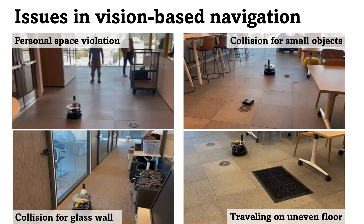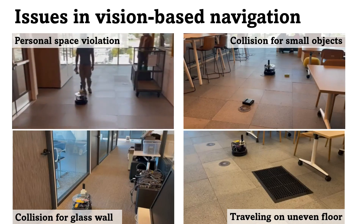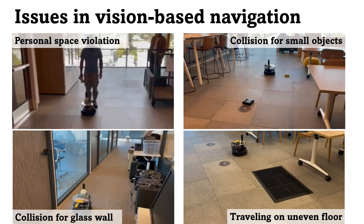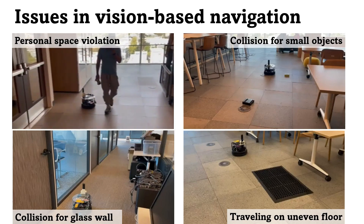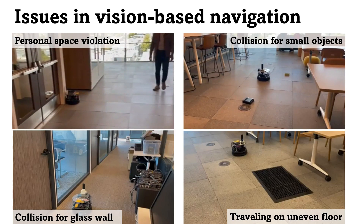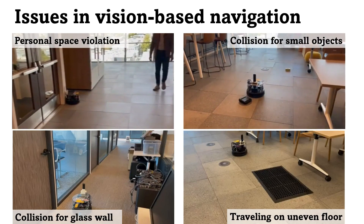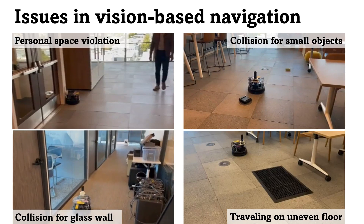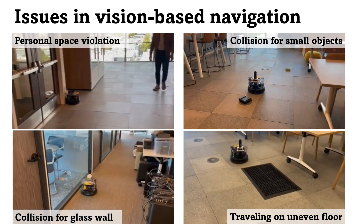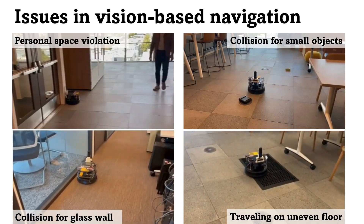In our evaluation, we apply SELFIE to tackle challenging tasks in vision-based navigation. In vision-based social navigation, the pre-trained model-based control policy, Saxon, will sometimes freeze in front of pedestrians, violating their personal space, preventing the robot from reaching the goal. Another limitation is its inaccurate modeling of the environment, causing the robot to collide with small and transparent obstacles such as glass. Moreover, when the robot tries to travel on uneven surfaces, it often gets stuck and fails to reach the goal.